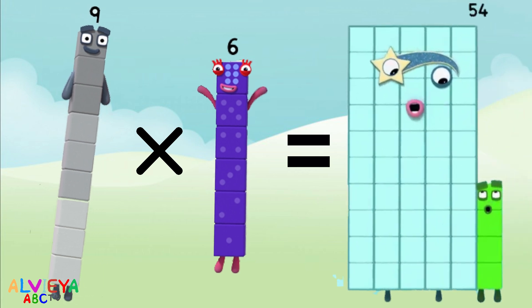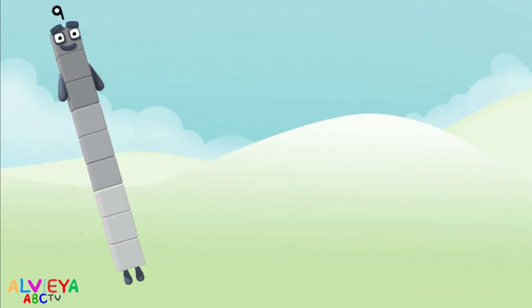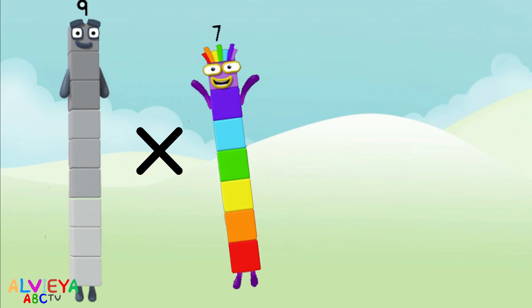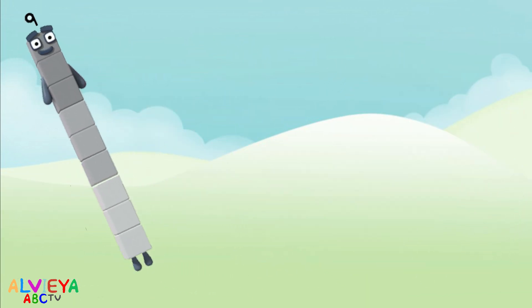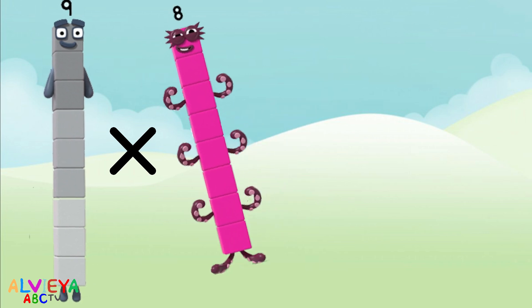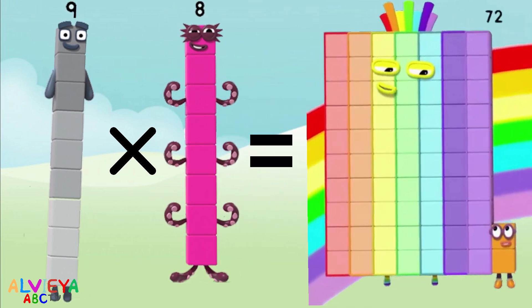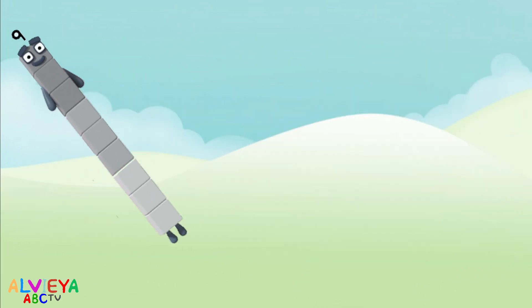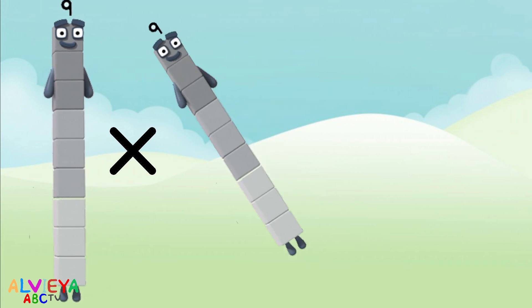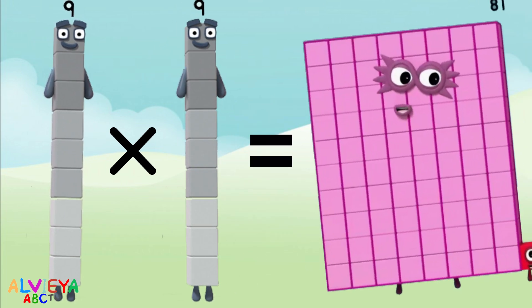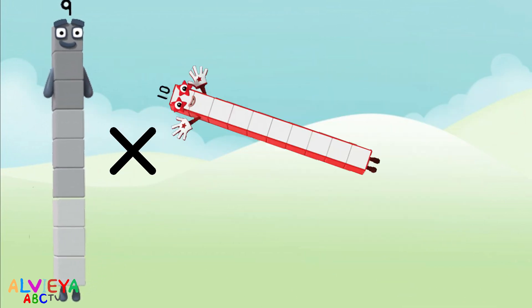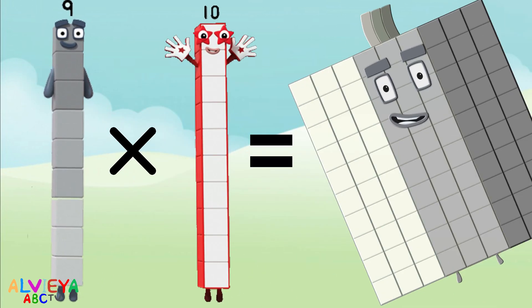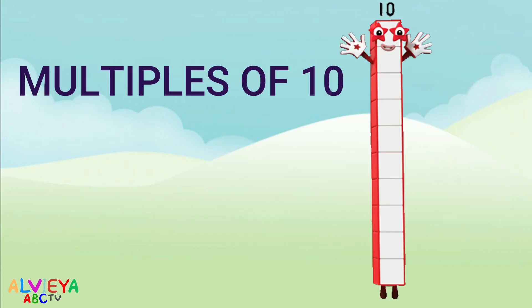Nine times seven equals sixty-three. Nine times eight equals seventy-two. Nine times nine equals eighty-one. Nine times ten equals ninety.